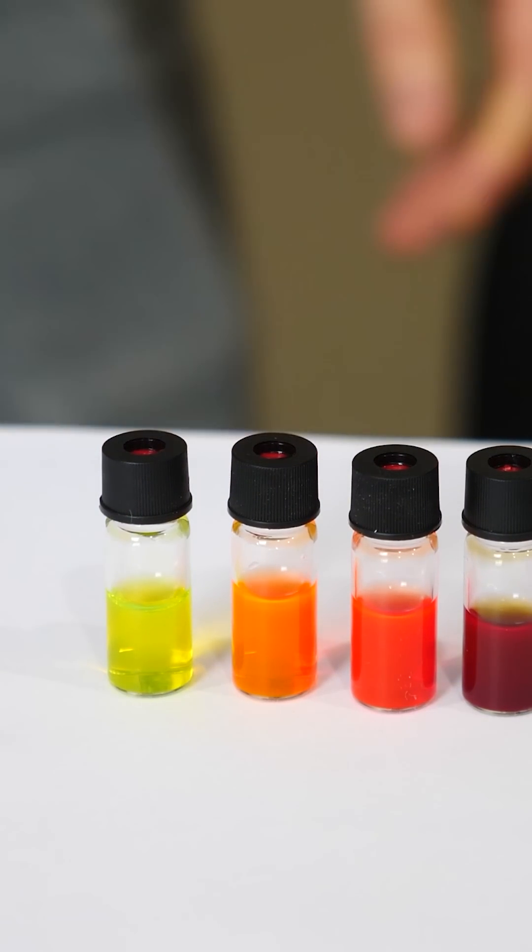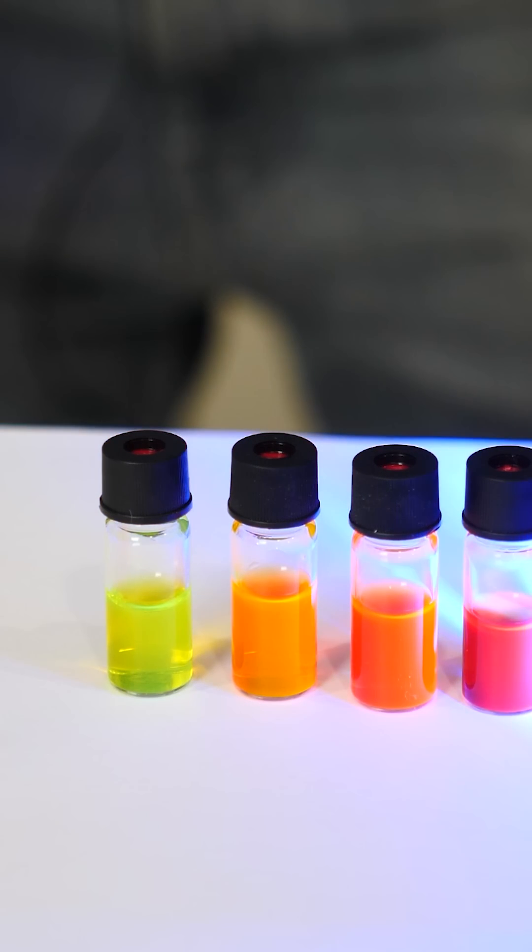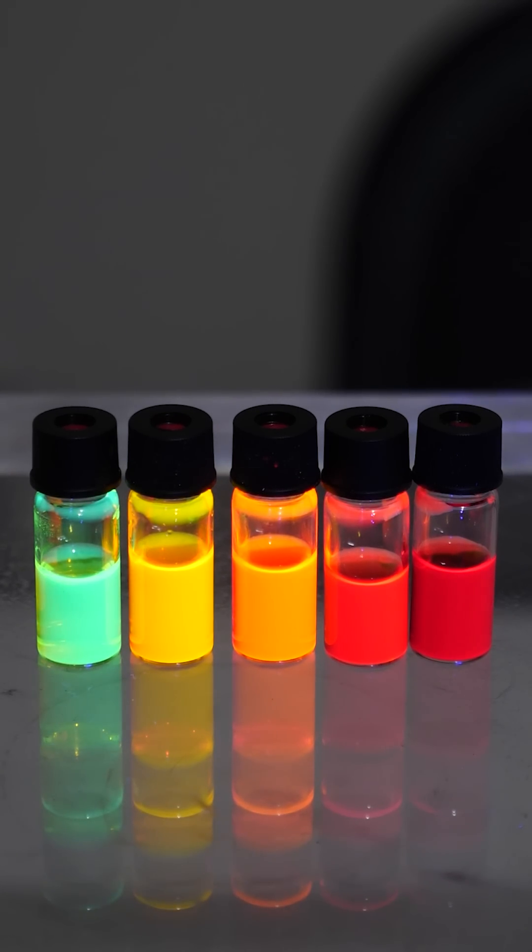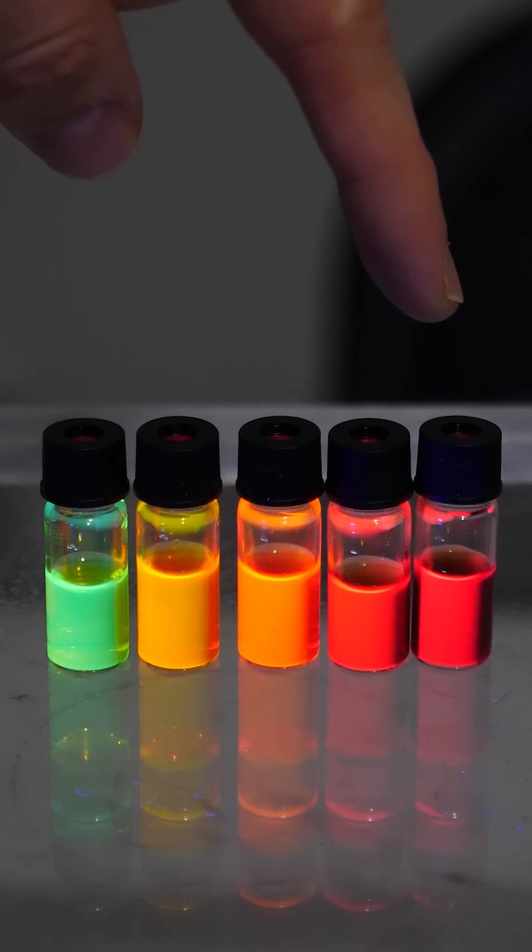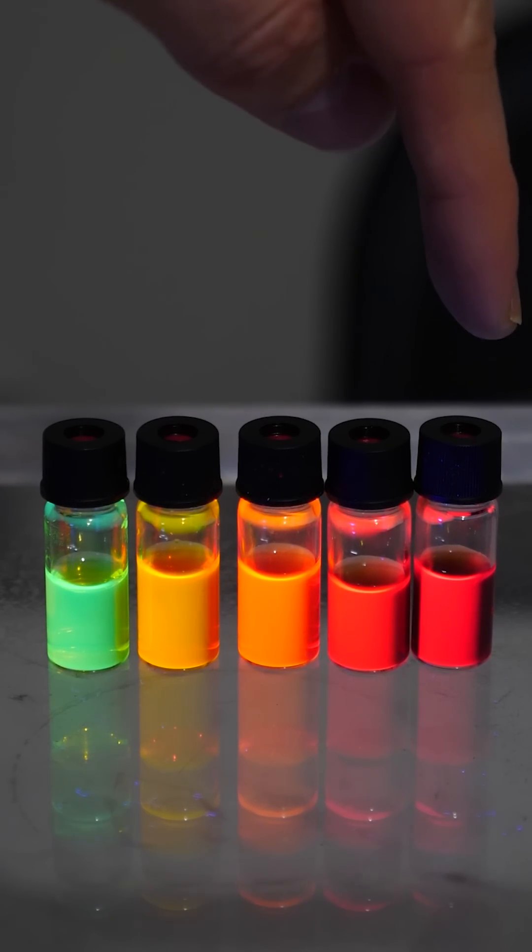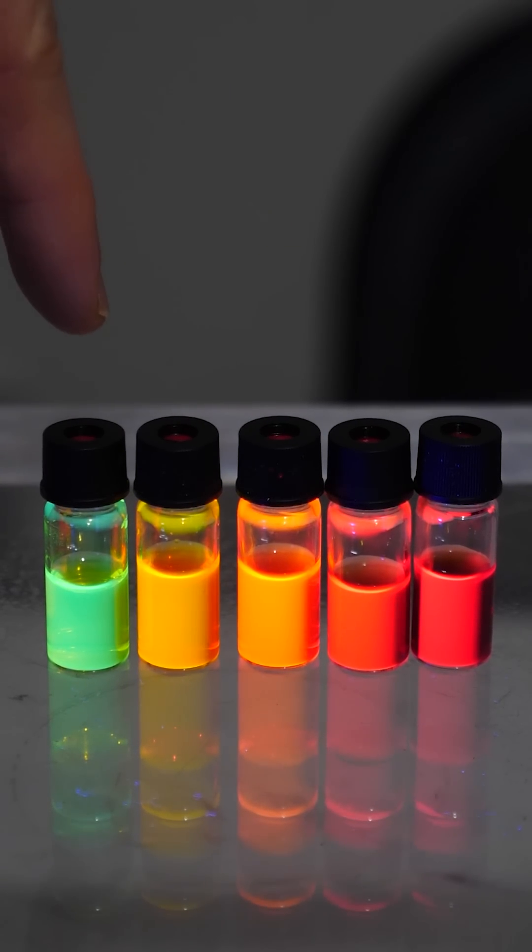You can see how when we shine ultraviolet light on them, they release visible light in different colors depending on the size. So the range of cadmium telluride on this end is around 6 nanometers in diameter, and on this end it's around 2 nanometers in diameter.